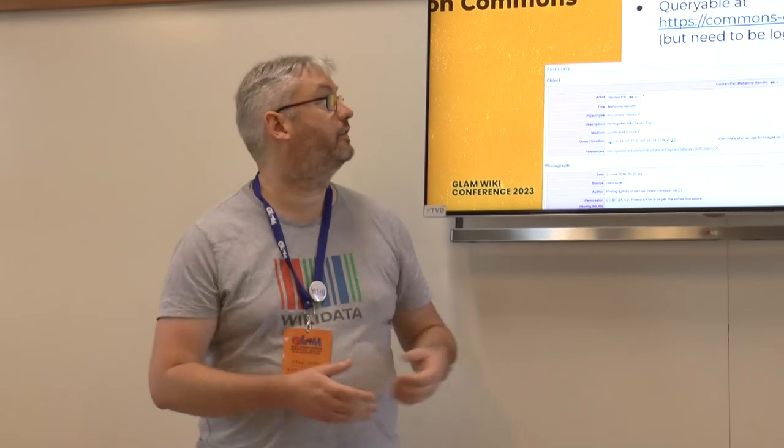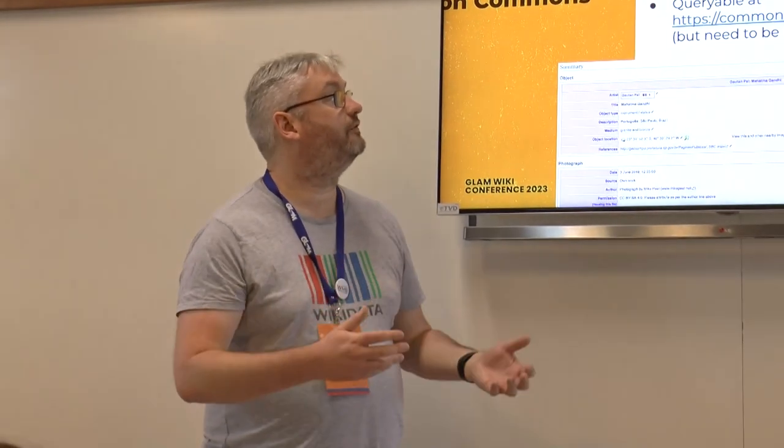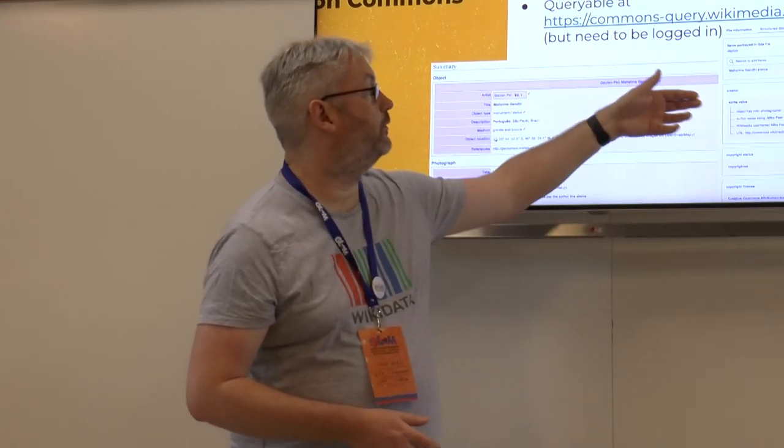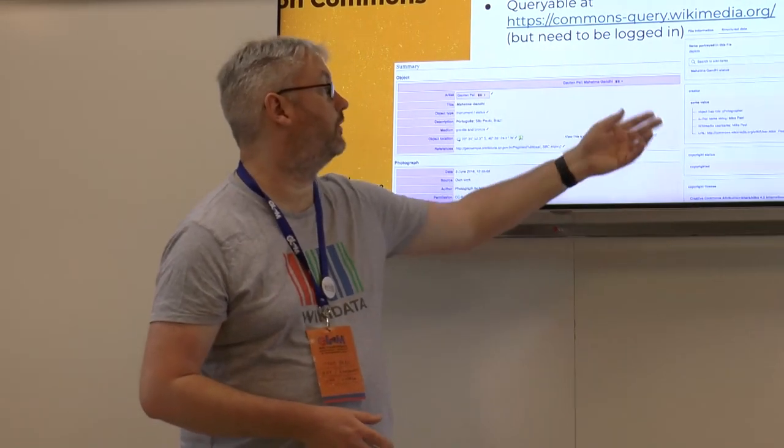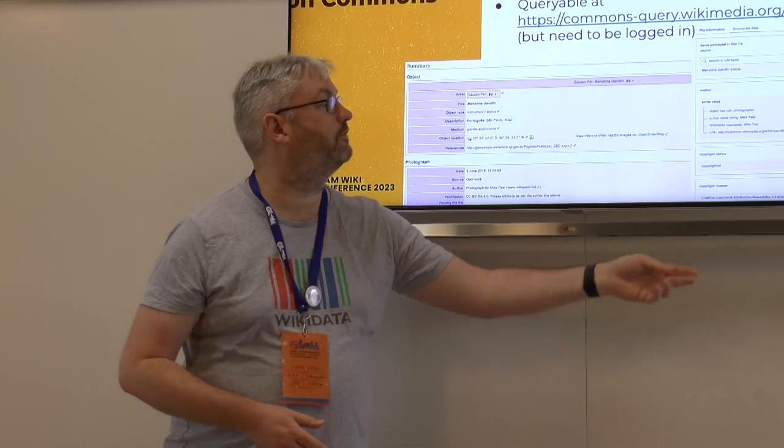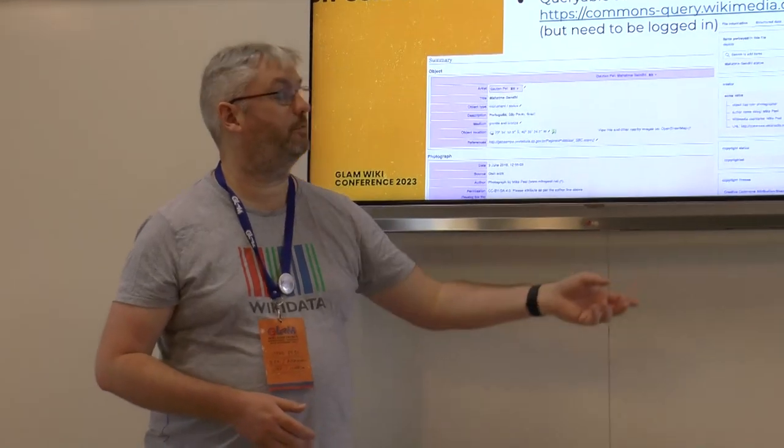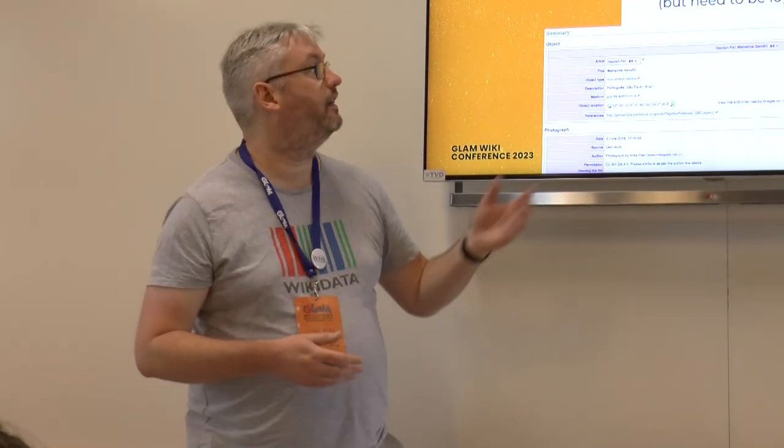So if you have a file on Commons, you can add information about it to the structured data. You can say who created it, who's in the photo, what's the username, what's the copyright status, what's the copyright license. You can also explain what it depicts — so you can say this is a photo of a statue of Gandhi.